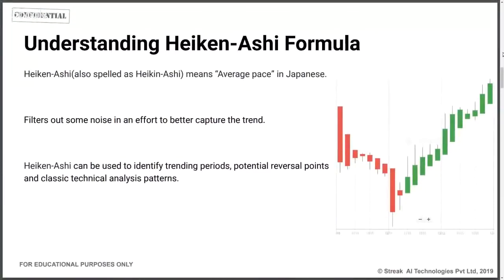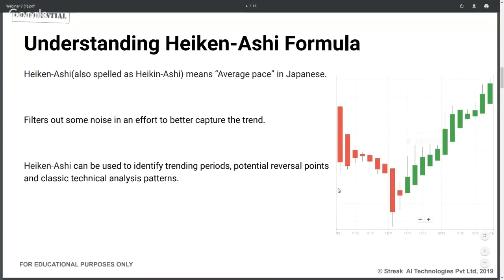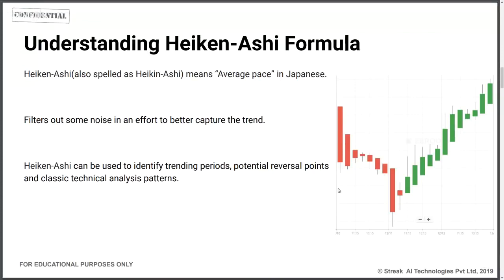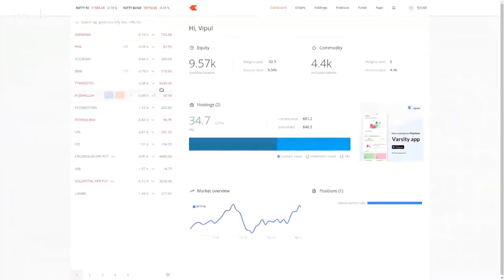Heikinashi is made of two Japanese words — Heiken means 'average' and Ashi means 'space.' It is spelled H-E-I-K-E-N or H-E-I-K-I-N, both are fine. Heikinashi was created to provide noise filtration — a kind of averaging over candlesticks. What that means is, compared to a regular candlestick chart like SBI, it smooths out price movements.